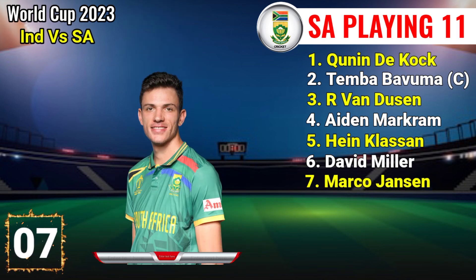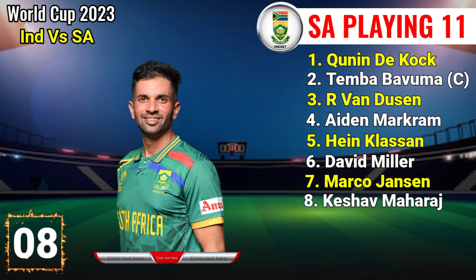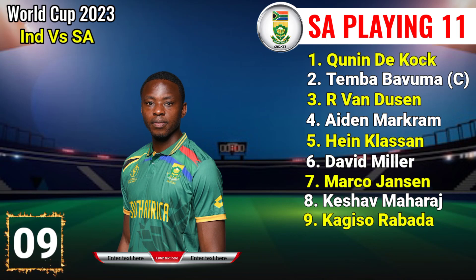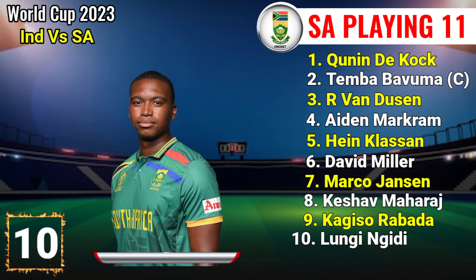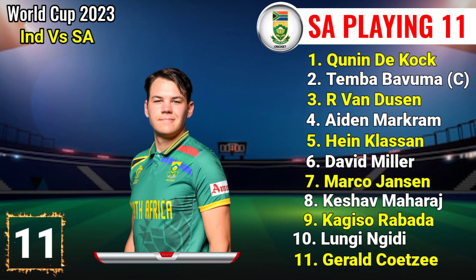Number 6: David Miller, left-hand batsman. Number 7: Marco Jansen, left-hand all-rounder. Number 8: Keshav Maharaj, right-hand all-rounder. Number 9: Kagiso Rabada, right-hand fast bowler. Number 10: Lungi Ngidi, right-hand fast bowler. Number 11: Gerald Coetzee, right-hand fast bowler.